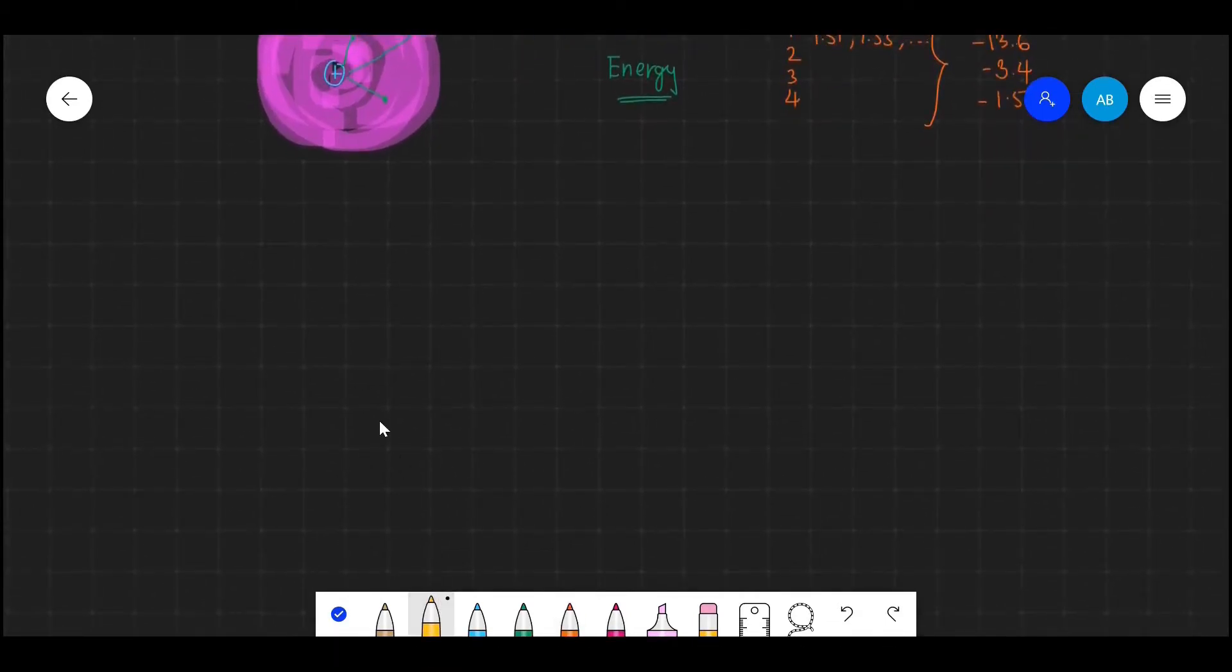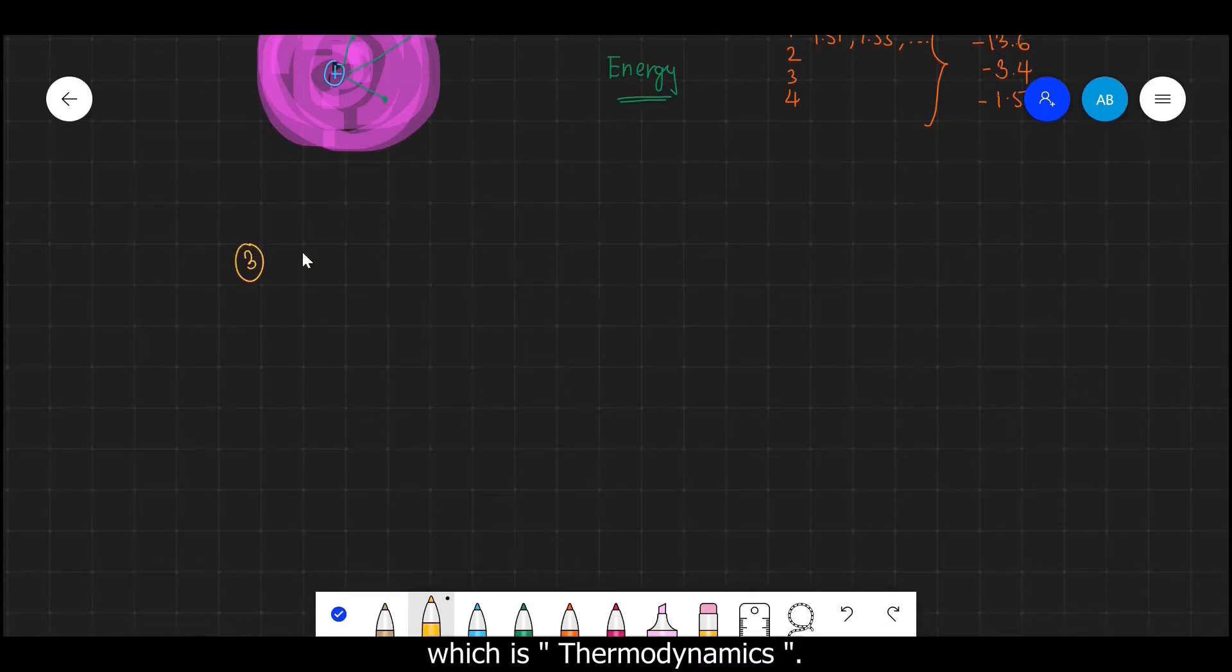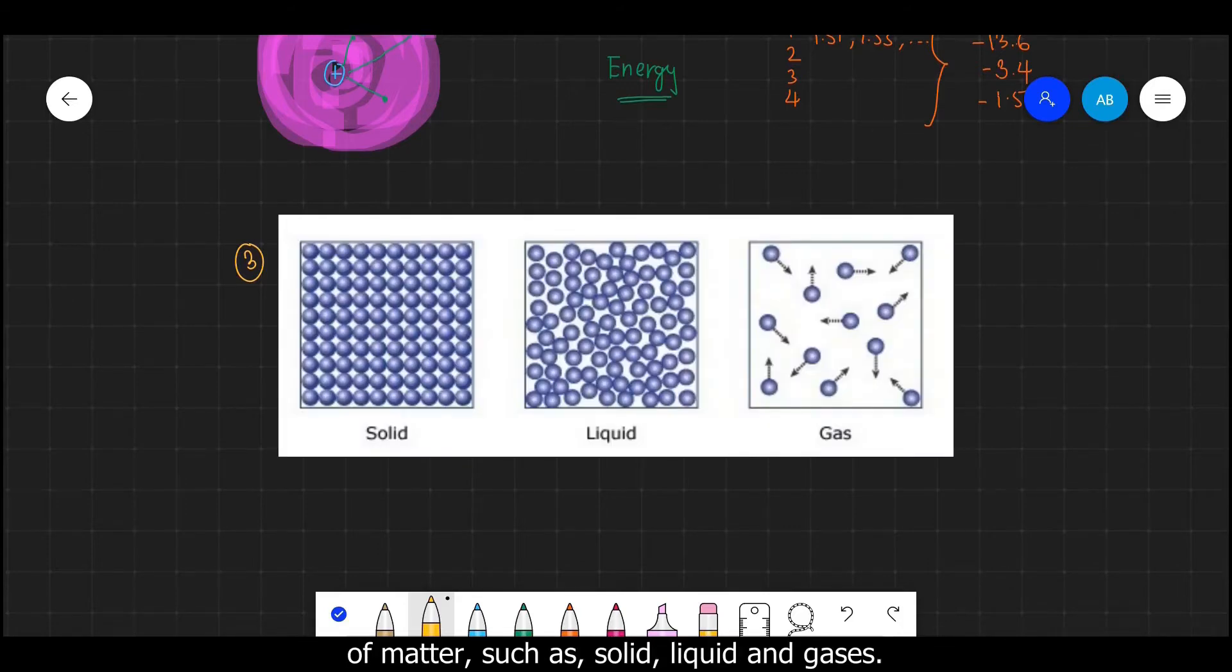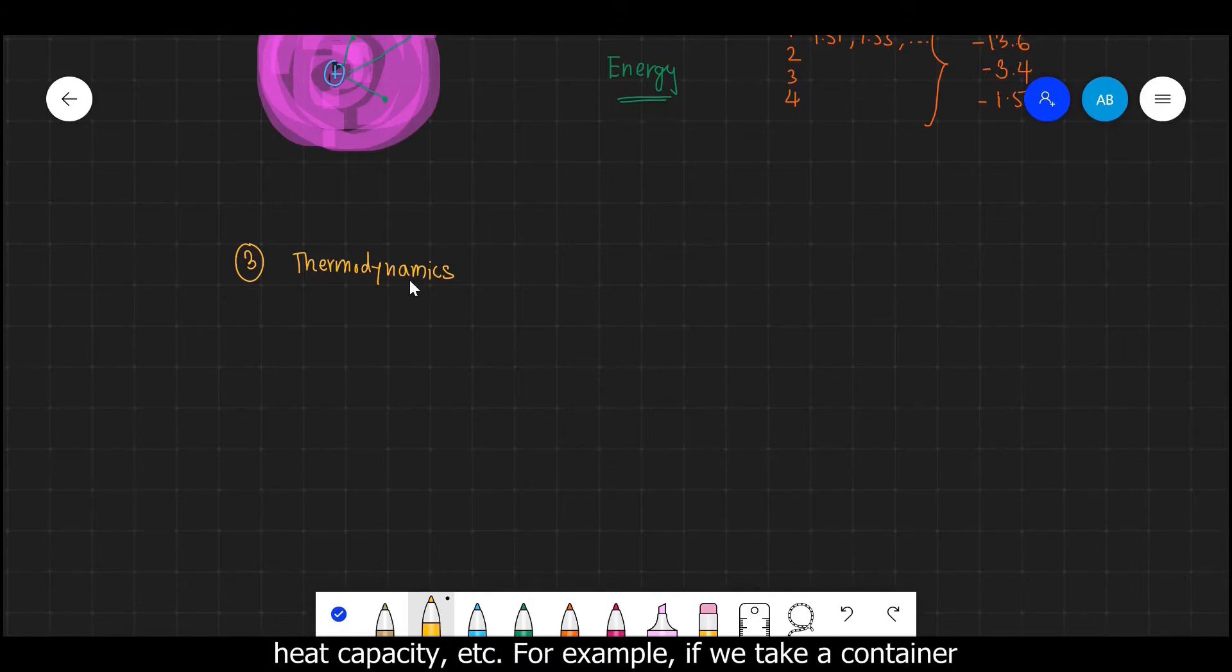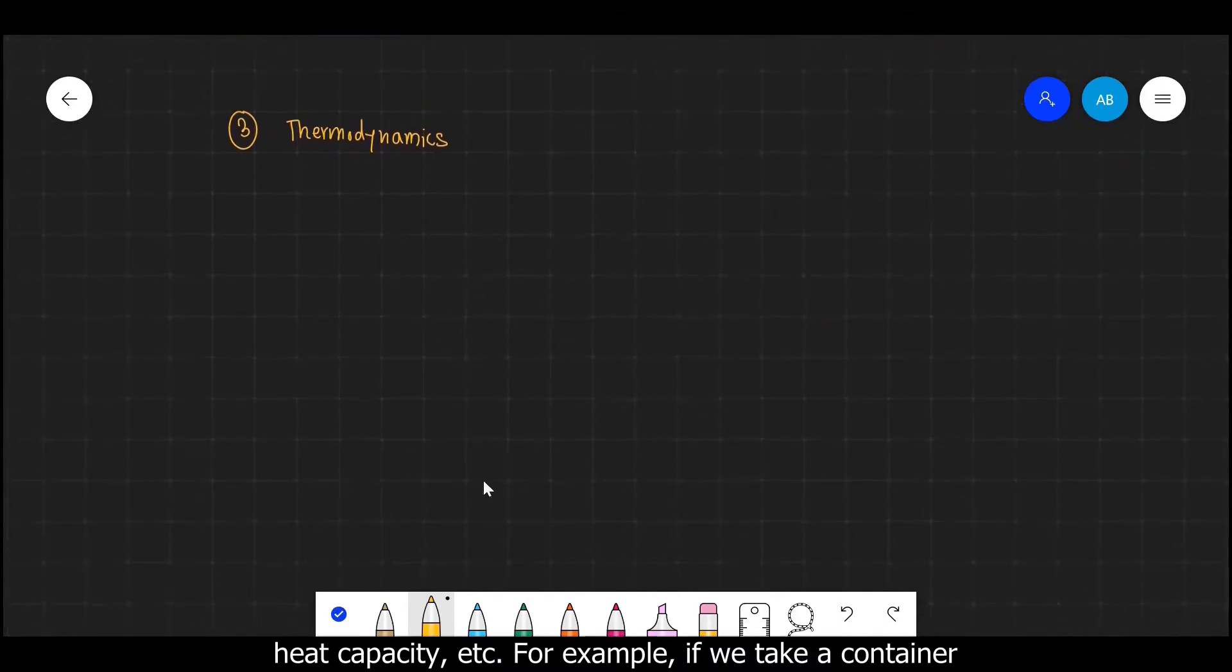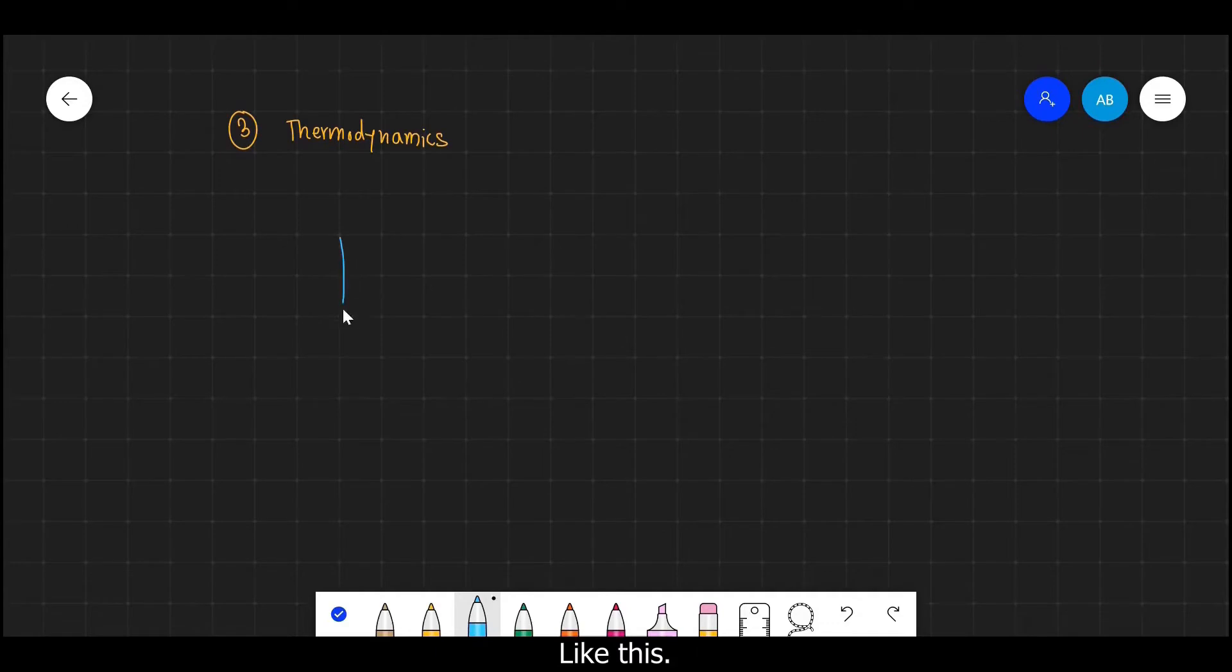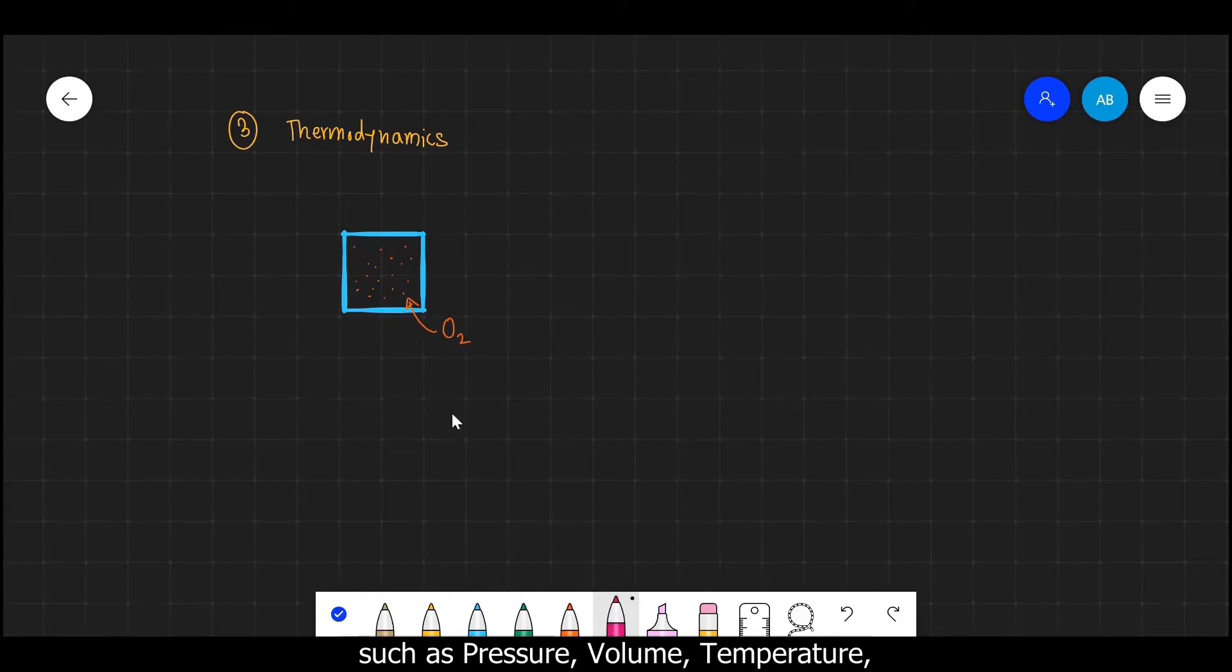So for now, let's move on to the next branch, which is thermodynamics. So this branch studies the properties of different states of matter such as solid, liquid, gases, where we try to find some thermodynamic properties such as its pressure, volume, temperature, energy, heat capacity, etc. So for example, if we take a container like this and inside it we fill an oxygen gas.